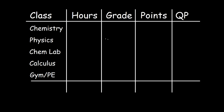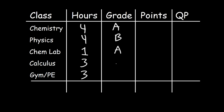Let's say the chemistry course is worth four credit hours, physics is the same, the lab is one hour, calculus will be a three-credit course, and PE will be a three-credit course as well. This particular student got an A in chemistry, a B in physics, an A in lab, a B in calculus, and an A in PE. What is the GPA for this student?